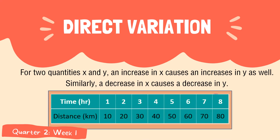Here is our example of a table of values that shows direct variation. As you can see, as the number of time increases, the distance also increases.